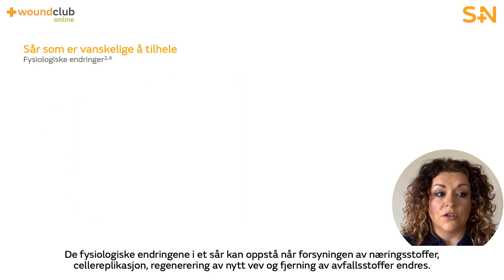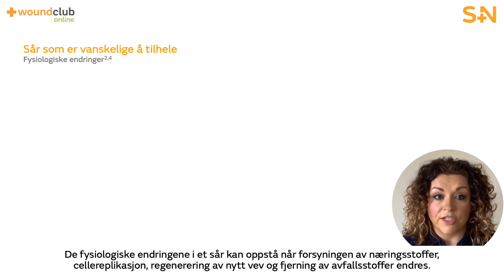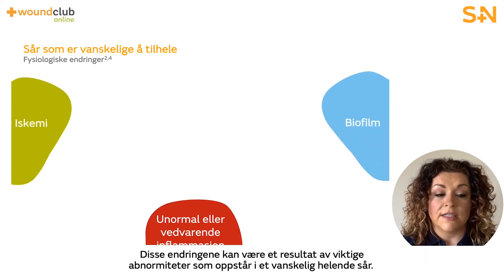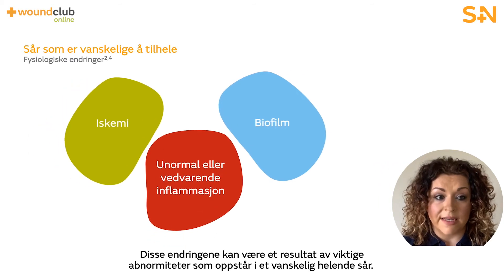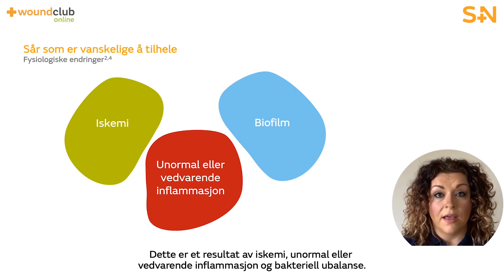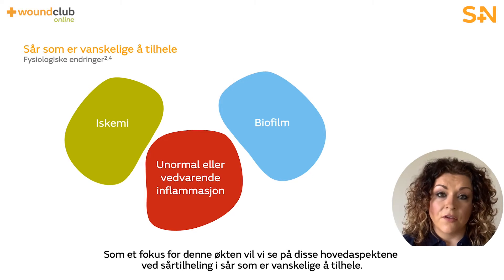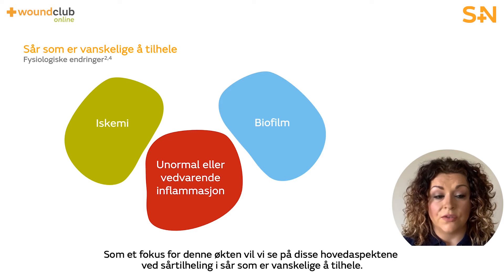The physiological changes within a wound can occur when the provision of nutrients, cell replication, regeneration of new tissue, and the removal of waste materials are altered. These changes can be as a result of key abnormalities that occur in the hard to heal wound — namely ischemia, abnormal or persistent inflammation, and bioburden. As a focus for this session we will look at these key aspects of wound healing in the hard to heal wound.